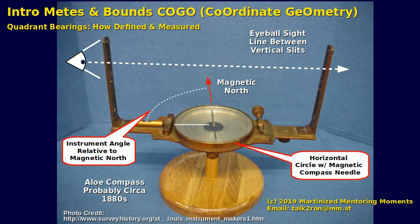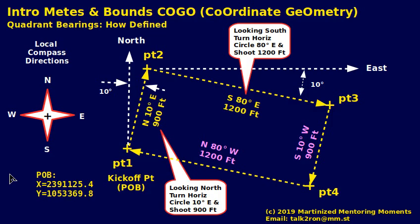So how are these angles used and reported on a map? Here's a typical map. Notice we have a local compass direction — it's always implied that we have some kind of orientation. We may have a benchmark that reports a point of beginning for point number one, the kickoff point, with some coordinates from a benchmark, GPS, or known source. The instrument man sets up over this kickoff point, the rod man sets up at a distance on point number two, and they measure an angle. They look north, then tilt 10 degrees to the east, and shoot a distance of 900 feet. So that's how you read it: looking north, turn the horizontal circle 10 degrees east, and shoot 900 feet.